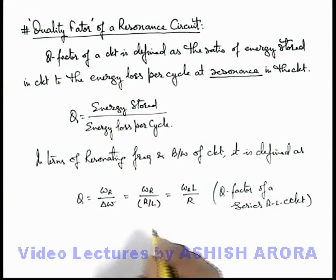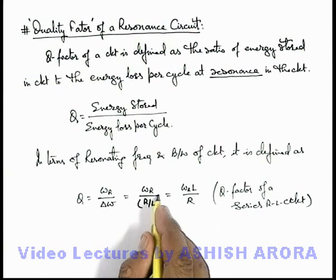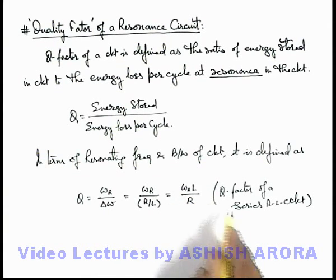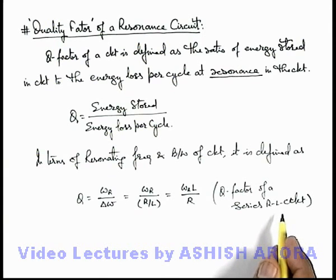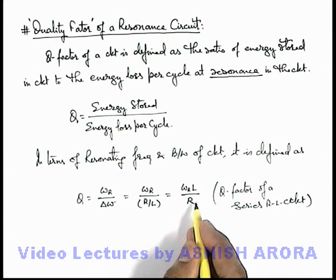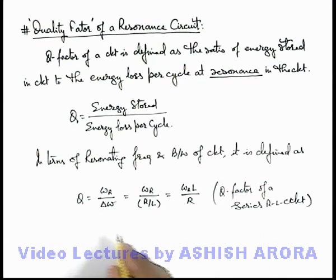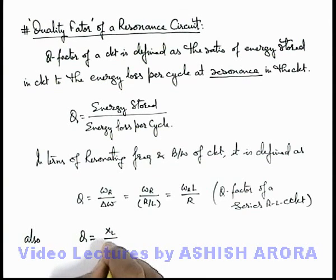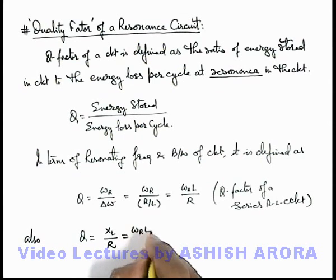As we just calculated for the series RLC circuit. We can also define the same relation as: Q factor is equal to inductive reactance divided by resistance. On calculation this will also give us ωᵣL divided by R. This is defined at resonance.